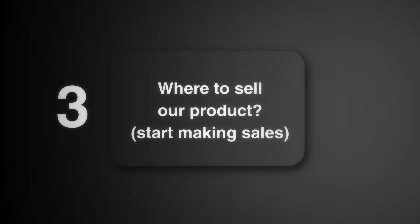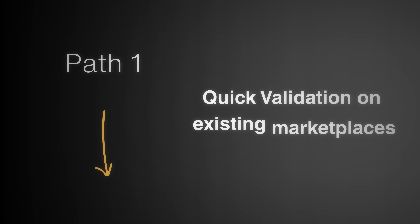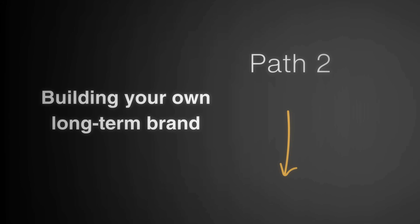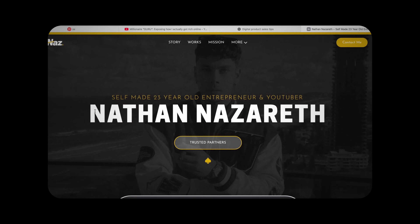By this point you've either created your product in under 10 minutes or you know what to do. Now comes the big question: where do you actually sell this? You have two paths. Path one: quick validation on existing marketplaces. Path two: building your own long-term brand. My advice — you need both. Let me explain path two first because this is where the real money is, and it's something you should be thinking about from day one. When I scaled my coaching program, I wasn't just selling on third-party platforms — I had my own website and my own brand, and that's what allowed me to scale beyond what any marketplace could have given me.